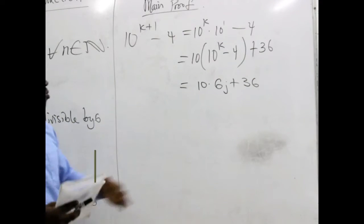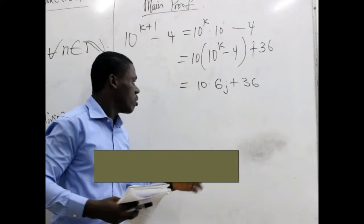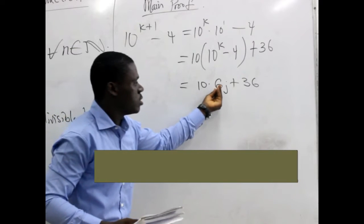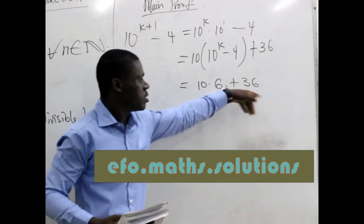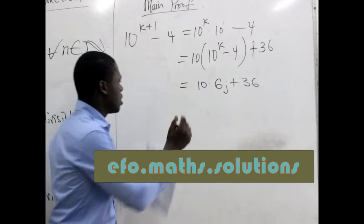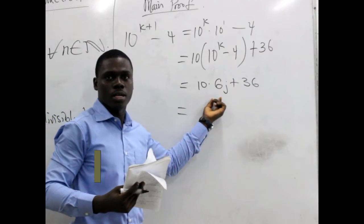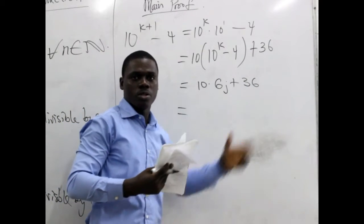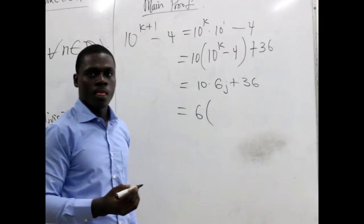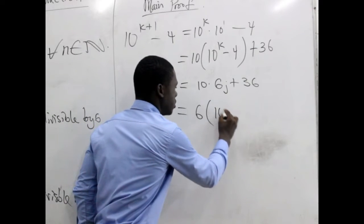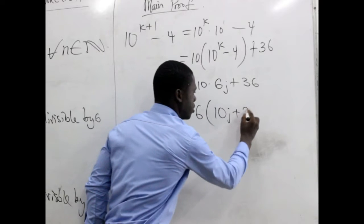Now we don't know what j stands for, we don't know its value, but all that we know is that 6 is here multiplying 10j and then 36. But realize that at this point we can factor 6 out because 6 is common to both terms. Factoring 6 out we have 6 times (10j plus 6).